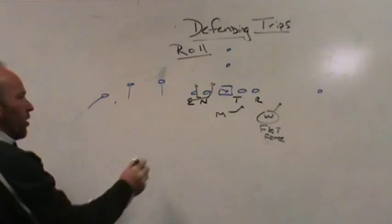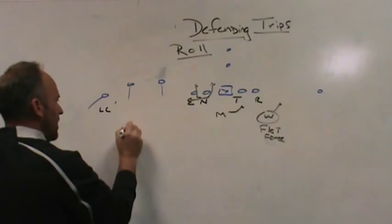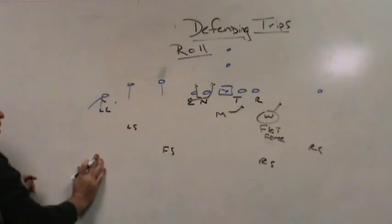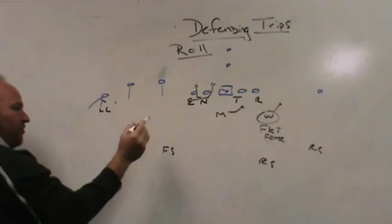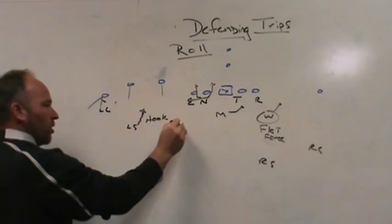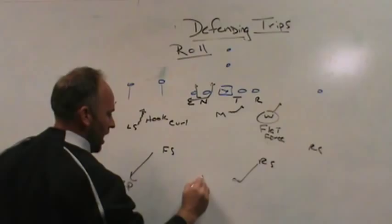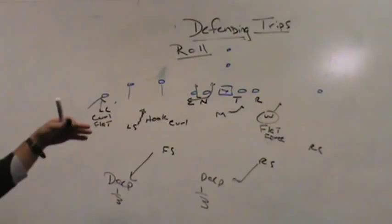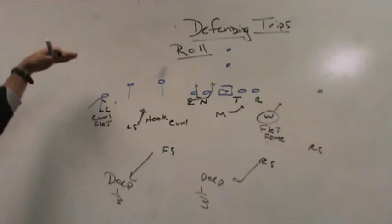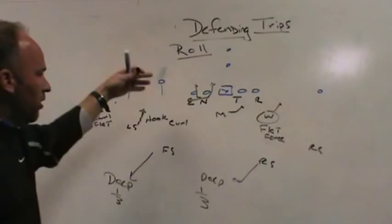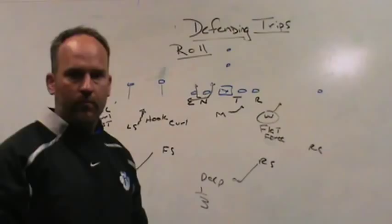The other thing you could do is roll with a corner down. Leave your corner there, then roll both safeties. The corner stays down — maybe press-funnel number one if they're a quick game team, and out-leverage the bubble. Take this safety and drop him down as your hook-curl defender, the other safety becomes your curl-flat defender, and you spin both safeties — one to a deep third, one to the deep middle third. I think you can roll a lot of different ways — safety slam down or corner slam down. Roll based on what you're trying to accomplish and what you're trying to take away, but it's still a strong side three-deep roll, so you'll have the same strengths and the same weaknesses on the backside.